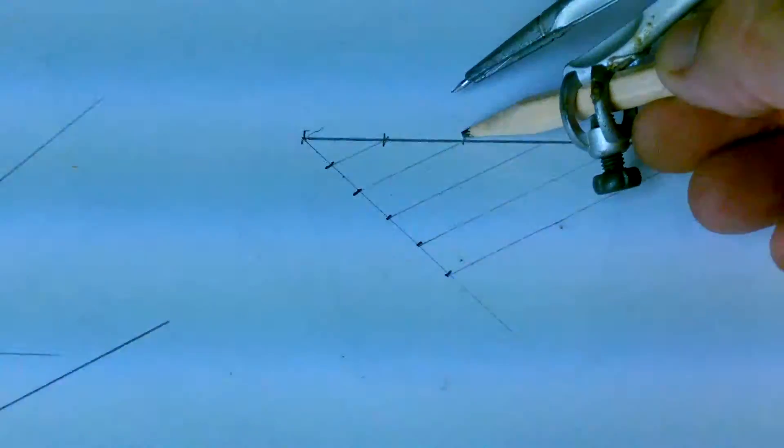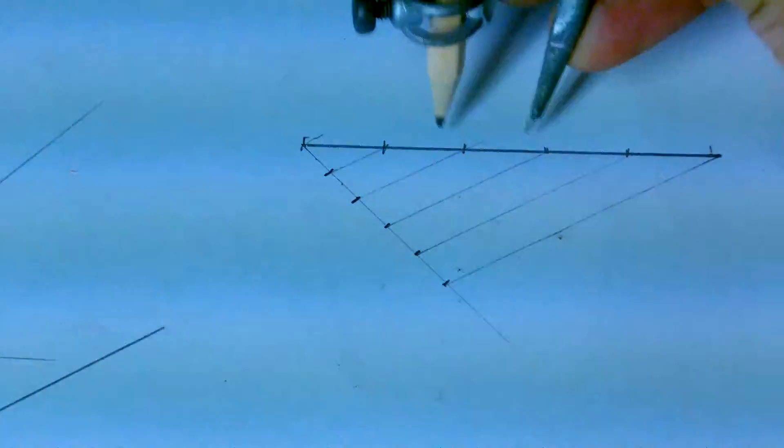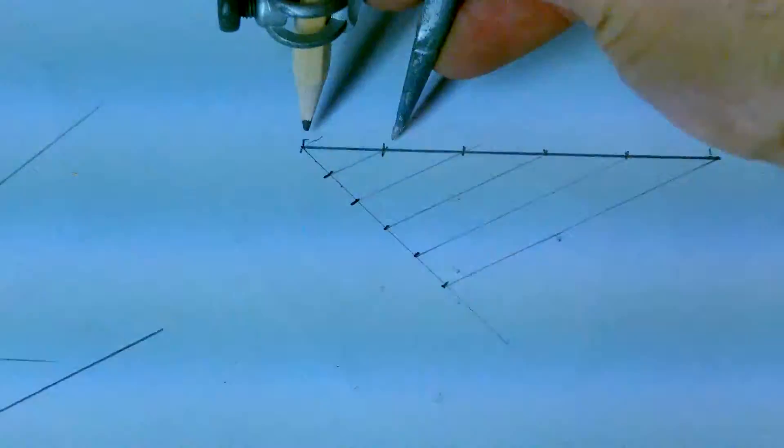This should give you five equal parts of your line. You can check them out. Obviously you have to work accurately to get good results. Those are very common geometrical constructions we use in technical design, graphical communication, or engineering drawing. Thanks for watching and feel free to ask comments or questions.